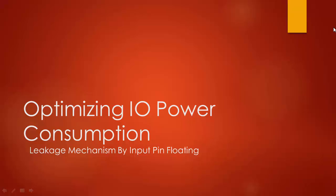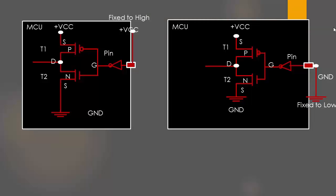As I previously mentioned, if an input pin is floating it may result in leakage current from VCC to the ground. In this video let's see how that could happen. First let's take the case of an input pin which is not floating but fixed to VCC or ground state.